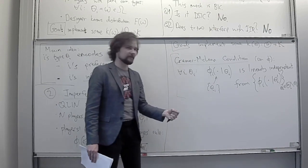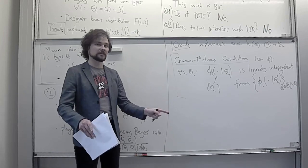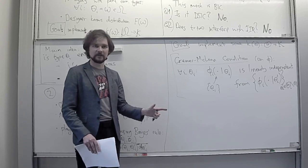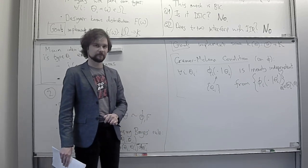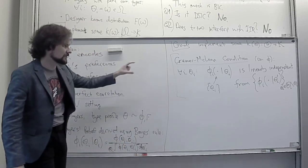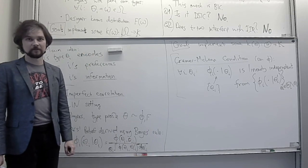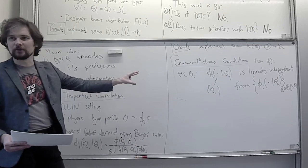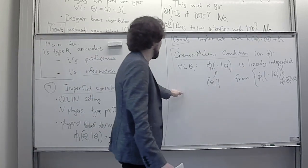Note that this condition is very much violated in the independent type setting, because there your beliefs about other players' types are the same for all of your types. Here we are saying not only that your beliefs may sometimes be different, but that your beliefs must be different for every type of your own. The actual linear independence condition is slightly stronger than that, but that is the key takeaway. Full rank is one way to interpret it. Let's practice using this condition and then take a break.